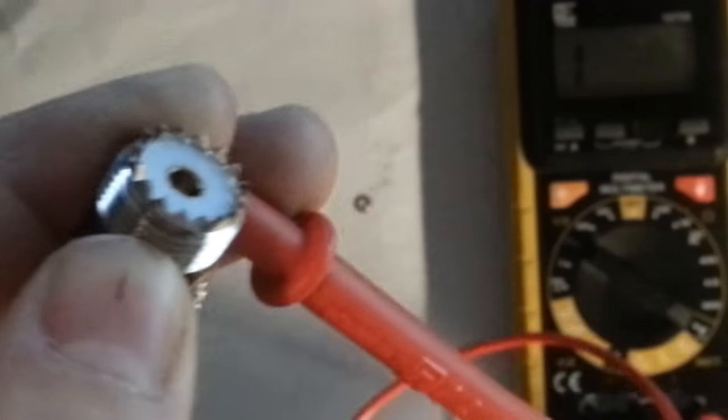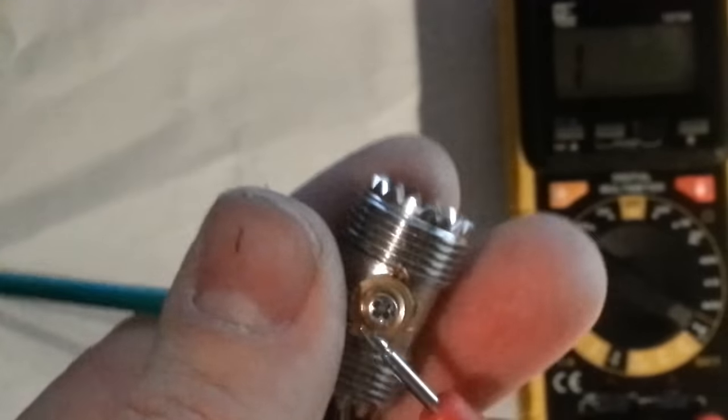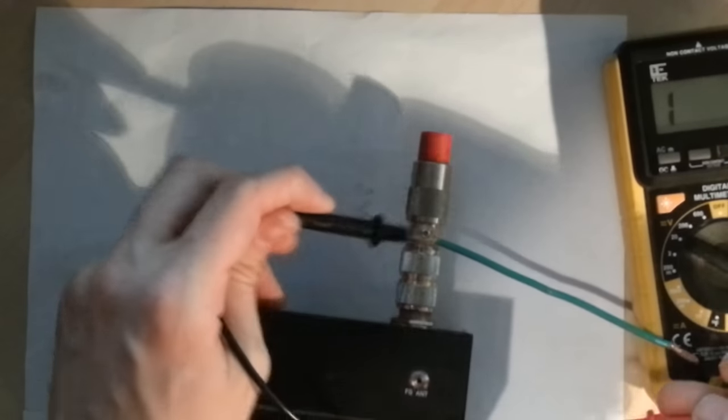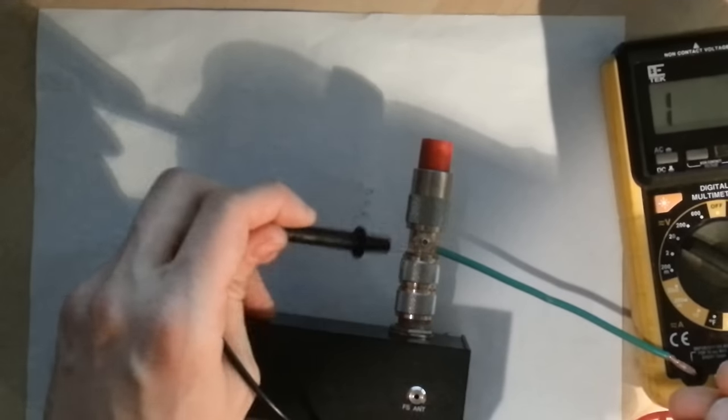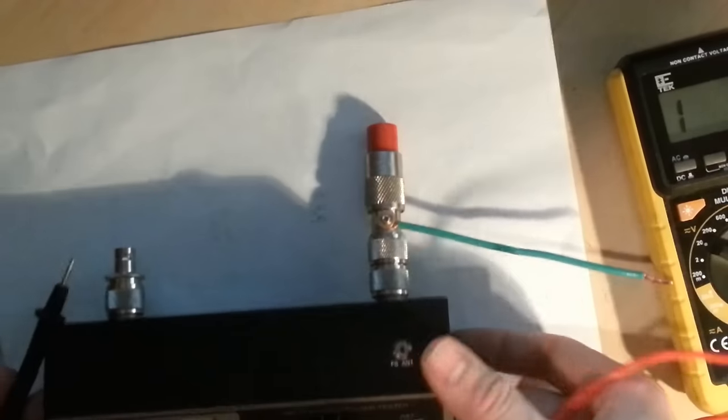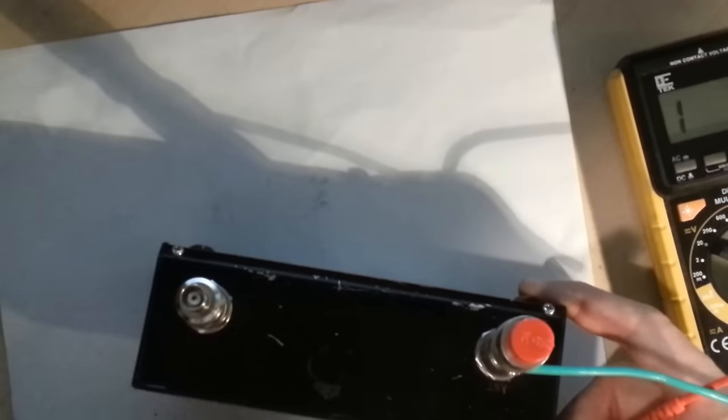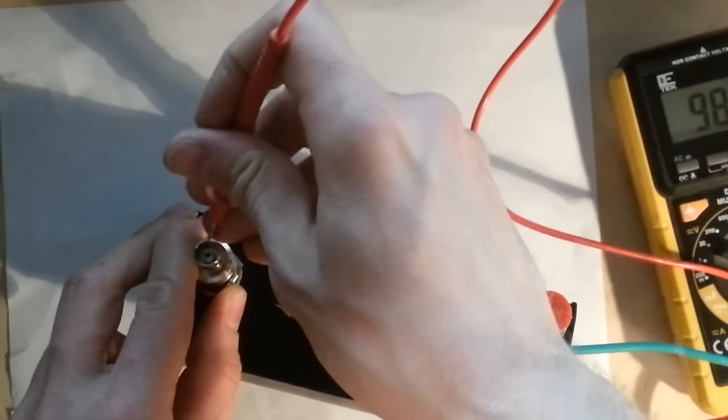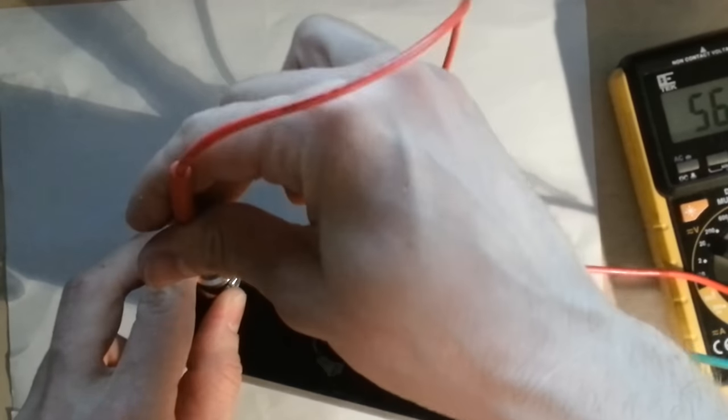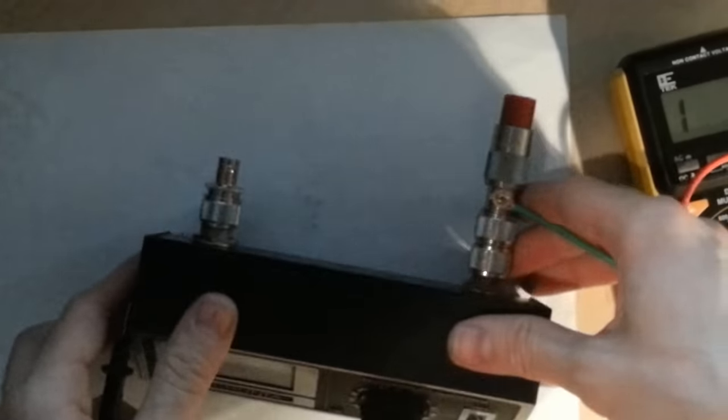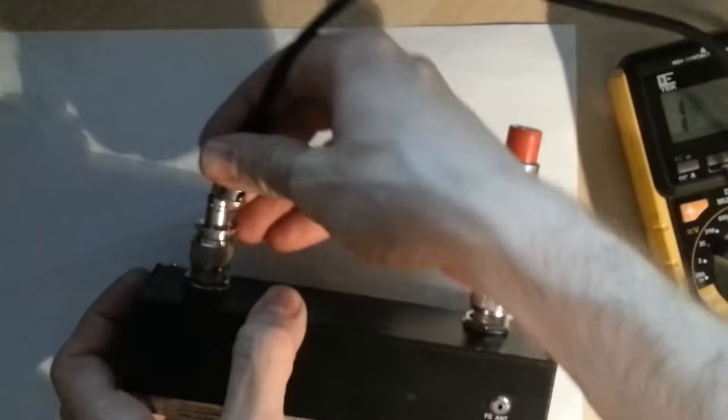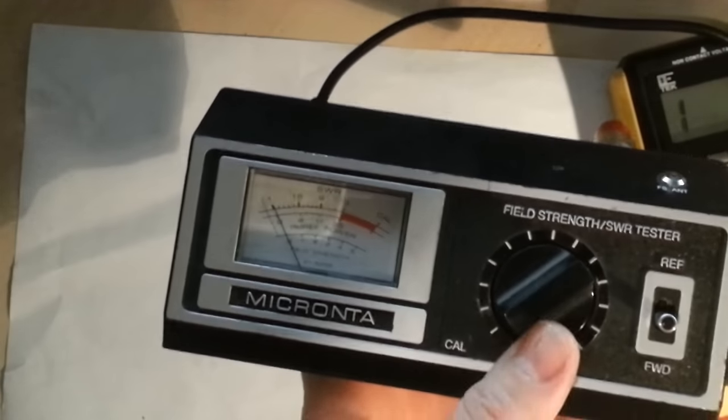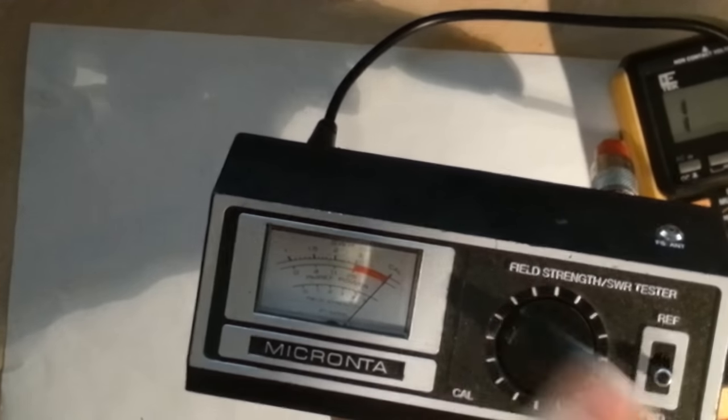All right, so here I have a dummy load, lightning arrestor, a coupler to an SWR meter, and I'm just going to double check here, make sure it's not shorted out from the last time. Okay, and it looks like it's pretty good. All right, so now I'm going to connect my transceiver, put it on forward, calibrate, and go up.